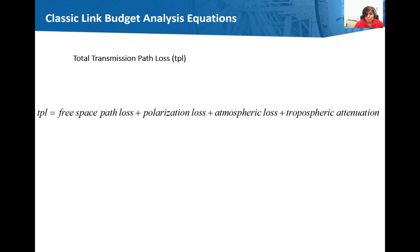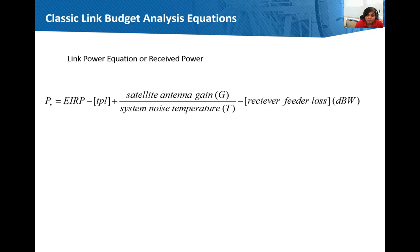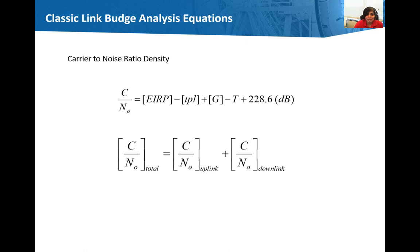Effective isotropic radiated power is the transmitted power added to the transmitted antenna gain minus the feeder loss. This is in dB. Total transmission path loss or TPL is free space path loss, polarization loss, atmospheric loss and tropospheric attenuation. And these are just some of the losses that I have added over here. Received power or the link power budget is the EIRP minus the total transmission path loss or TPL and the receiver feeder loss. You can also add the satellite antenna gain divided by the system noise temperature to this part. I don't have some of the values. So, this is again just an approximation. Last is carrier to noise density. It is a ratio of performance of a satellite link. It is a ratio of carrier power to noise power. It is adding all the gains and then subtracting the path losses and the system temperature. Here we will look at the downlink value though the total value is the carrier to noise ratio uplink as well as downlink.